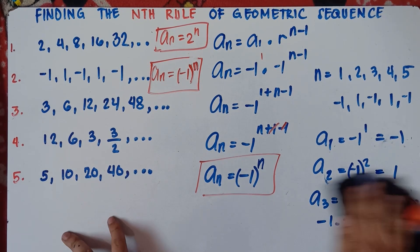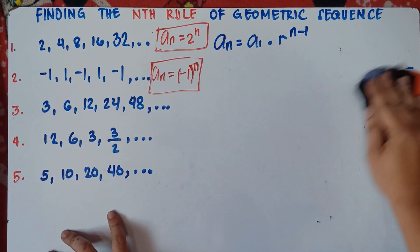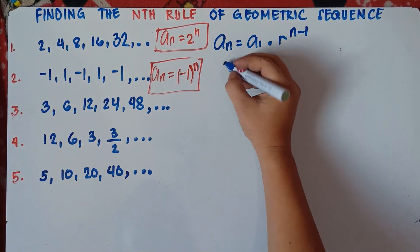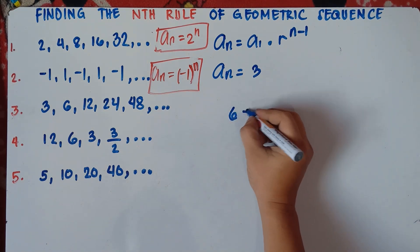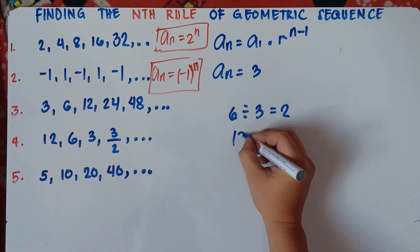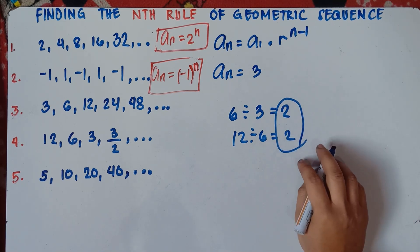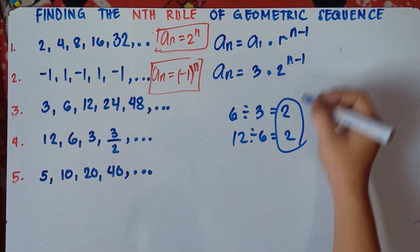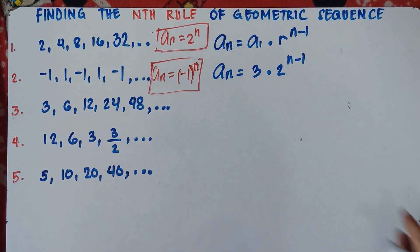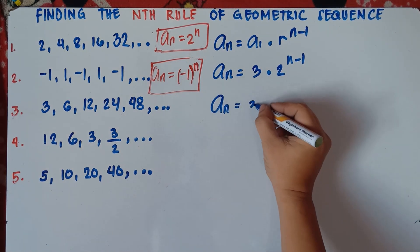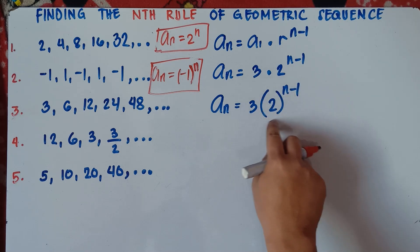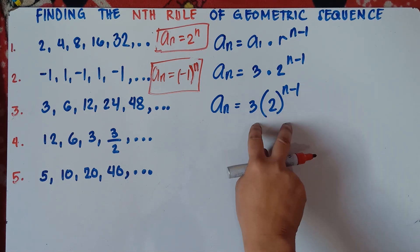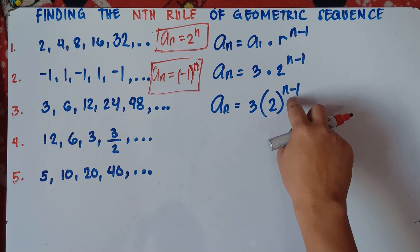Alright, let's try number 3. Now what if they don't have the same base? So a sub n equals — the first term is 3, and the common ratio: 6 divided by 3 is 2, and 12 divided by 6 is 2 — therefore the common ratio is 2. So 3 times 2 raised to the power of n minus 1. Since they don't have the same base, we cannot copy the base, so simply write a sub n equals 3 times 2 raised to the power of n minus 1. That would be your answer class.